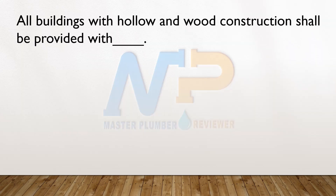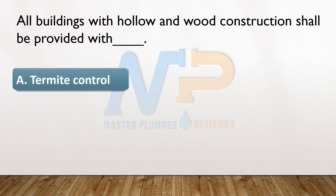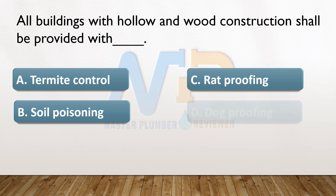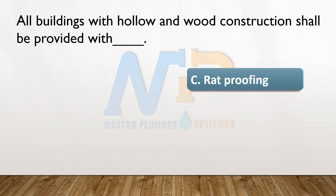All buildings with hollow and wood construction shall be provided with blank. A. Termite control. B. Soil poisoning. C. Rat proofing. D. Dog proofing. The answer: C. Rat proofing.